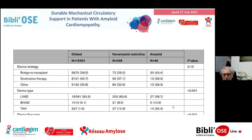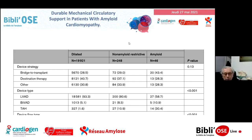Ce qui est intéressant à noter, c'est le type de device utilisé. C'était en grande partie des LVAD, des assistances monventriculaires gauches, pour les cardiomyopathies dilatées. Alors que pour les amyloïdes, il fallait soit des BiVAD soit des cœurs artificiels complets, parce qu'il y avait une atteinte plutôt biventriculaire, les assistances longue durée sur les dilatées étant plutôt des mono-gauches avec un VD préservé.